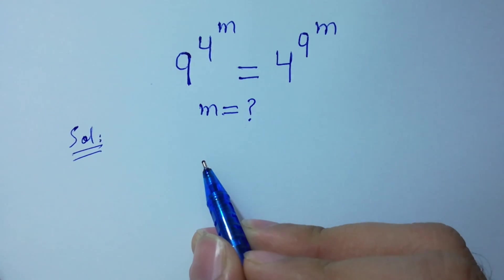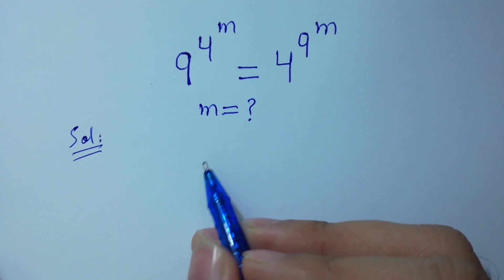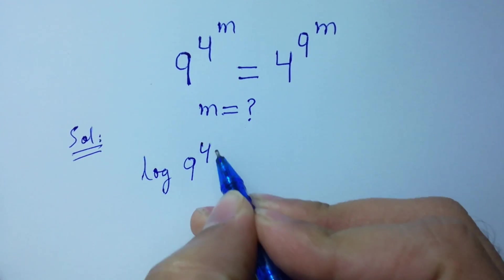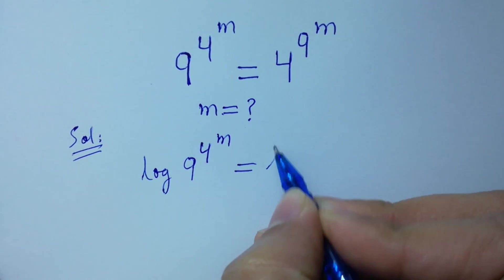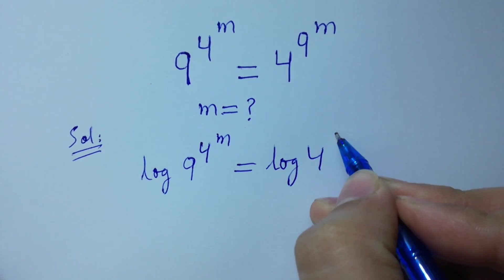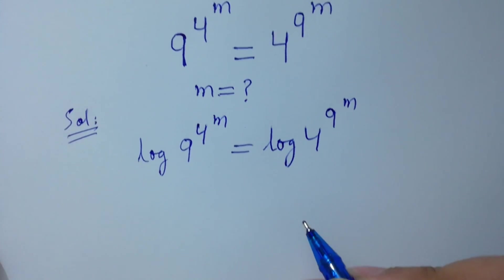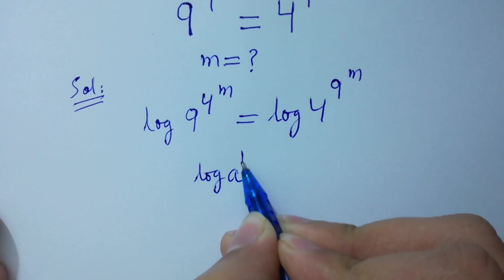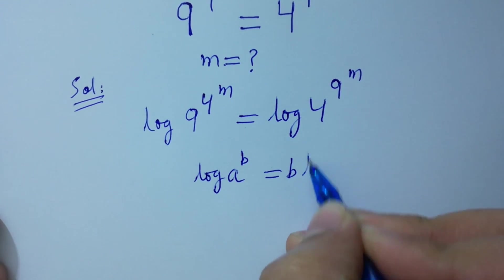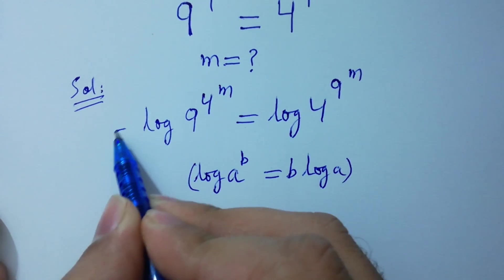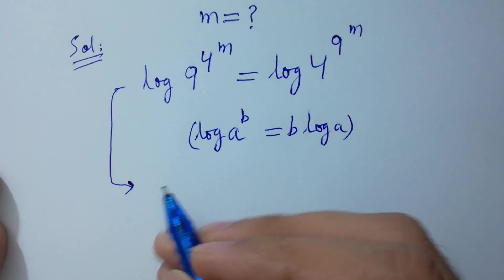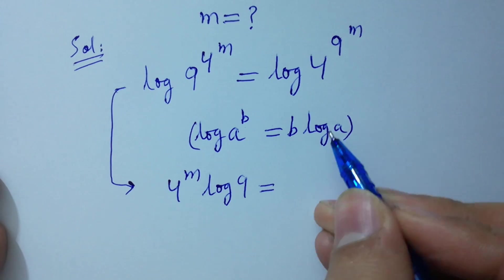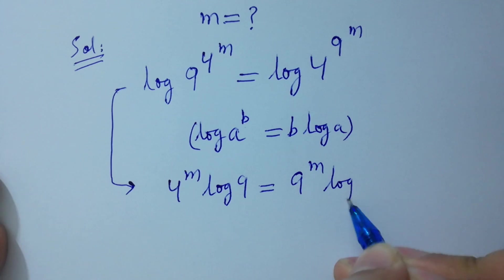To solve this, first of all, take log on both sides. Log 9 to the power 4 to the power m equal to log 4 to the power 9 to the power m. And since log a to the power b equal to b log a, it will be equal to 4 to the power m log 9 equal to 9 to the power m log 4.